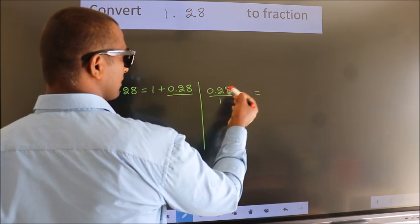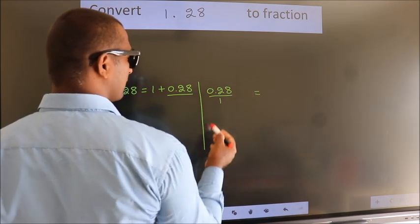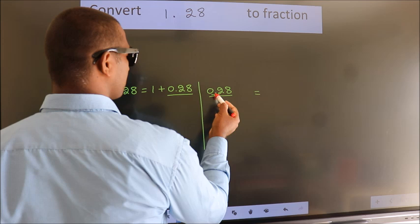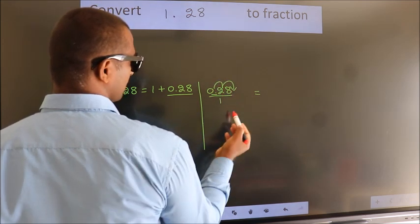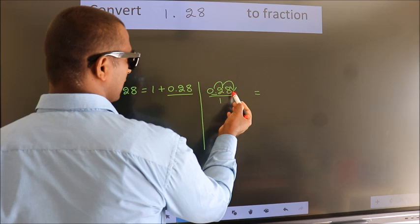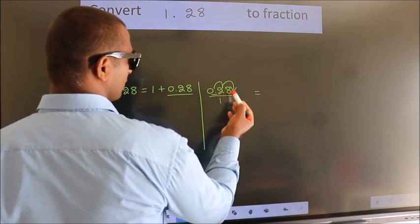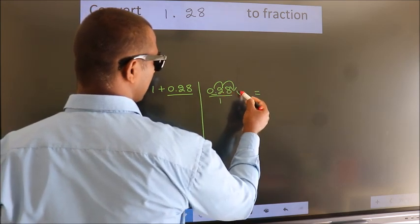To convert this to fraction, we have to move this decimal after 2 numbers. To move this decimal after 2 numbers, we should multiply it with 100.